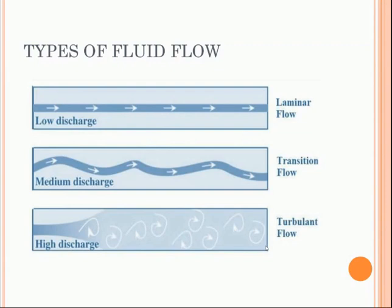How does the type of flow affect friction in pipes? In laminar flow, the friction factor represents the loss of pressure of a fluid in a pipe due to interactions between the fluid and the pipe. It is only a function of the Reynolds number and is independent of the surface roughness of the pipe. In fully turbulent flows, the friction factor depends on both the Reynolds number and the relative roughness of the pipe wall.